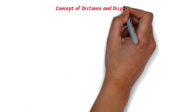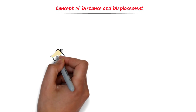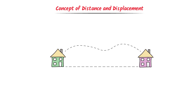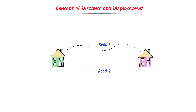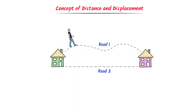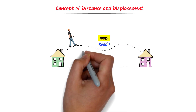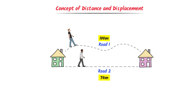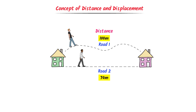Firstly, let me teach you the basic concept of distance and displacement. Let's consider two houses connected by two different roads — road number one and road number two. One person uses road number one to go from one house to the other and travels 100 meters. While the second person uses road number two and travels 70 meters. We call road number one as distance, so 100 meters is the distance between these two houses.